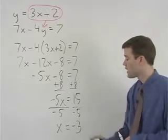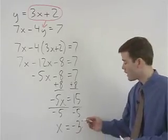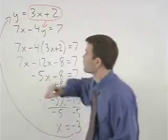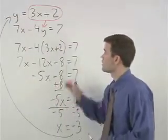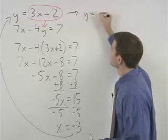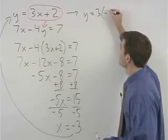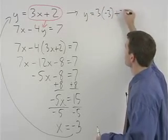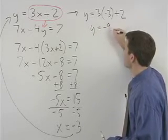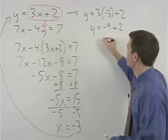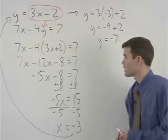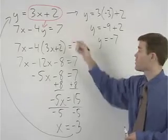To find y, plug negative 3 back in for x in the first equation to get y equals 3 times negative 3 plus 2, which simplifies to y equals negative 9 plus 2, or y equals negative 7. So the solution to this system is x equals negative 3 and y equals negative 7.